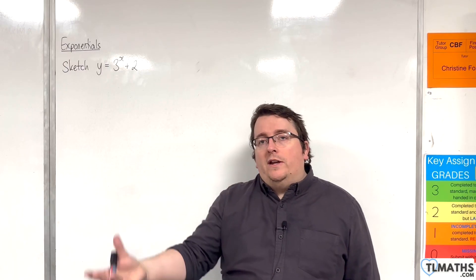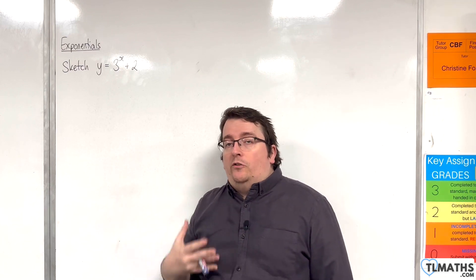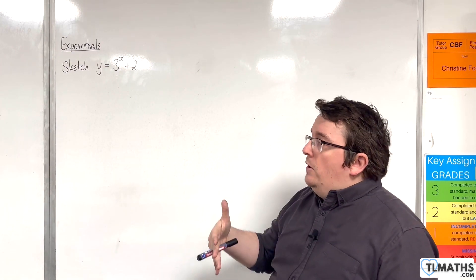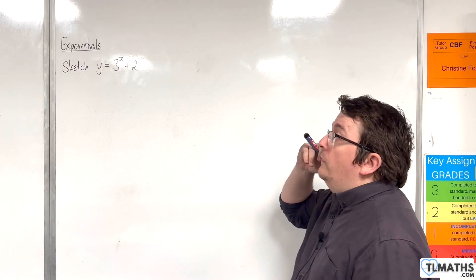So we've looked at what y equals 2 to the x, or y equals 3 to the x, or y equals 4 to the x look like in general. We're now going to perform a vertical translation of that.